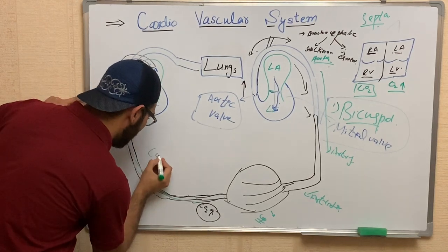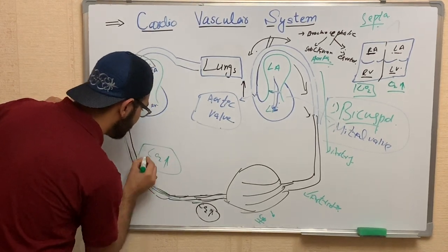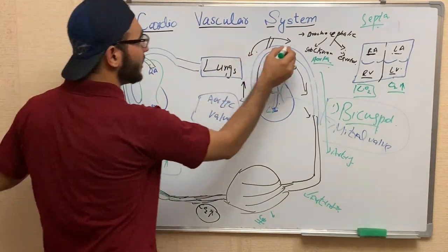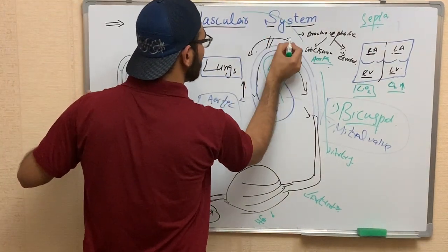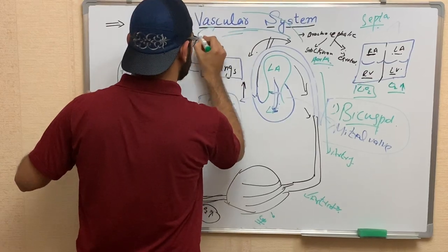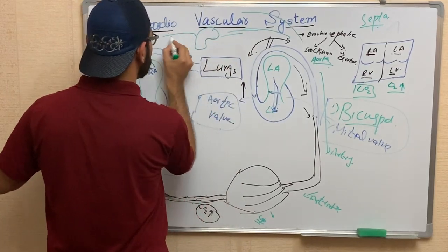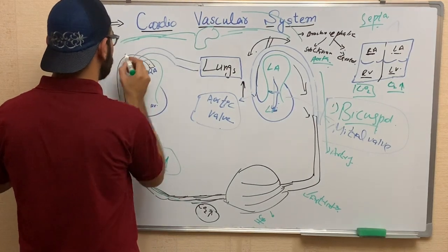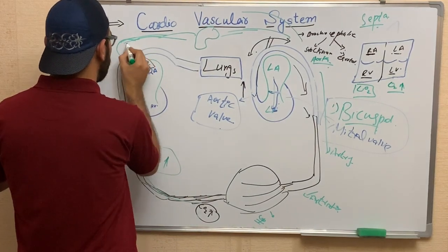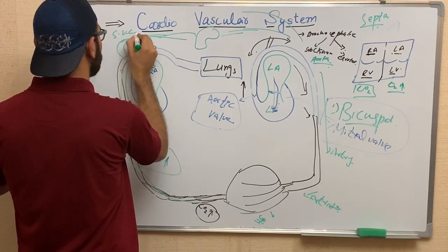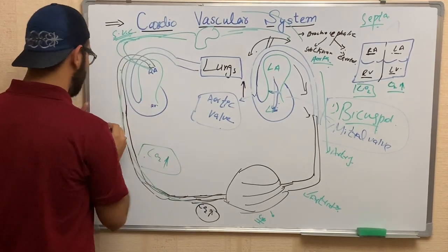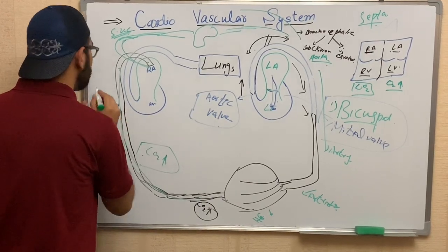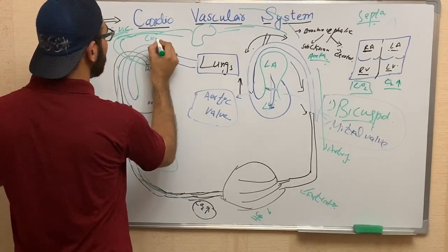The deoxygenated blood, which has a high concentration of carbon dioxide, also supplies the brain, head, and neck region. Then with the help of the superior vena cava, this blood also supplies into the right atrium. The superior vena cava and inferior vena cava both contain high levels of carbon dioxide.